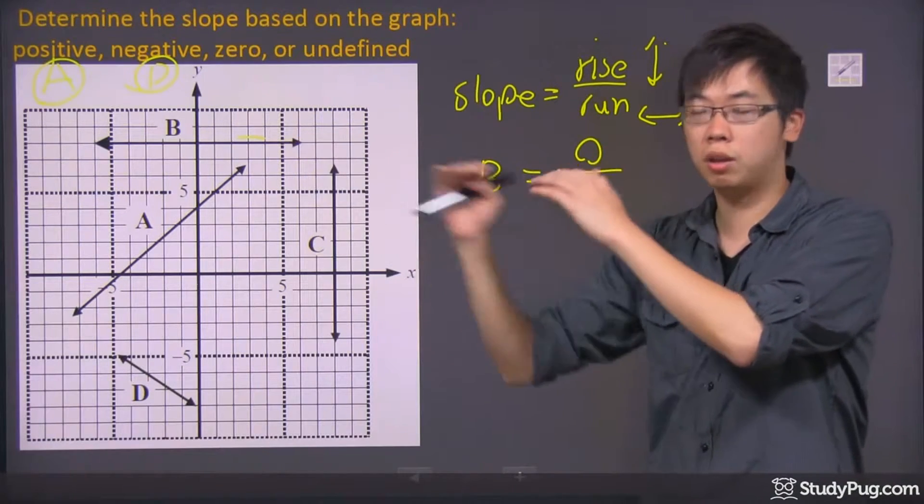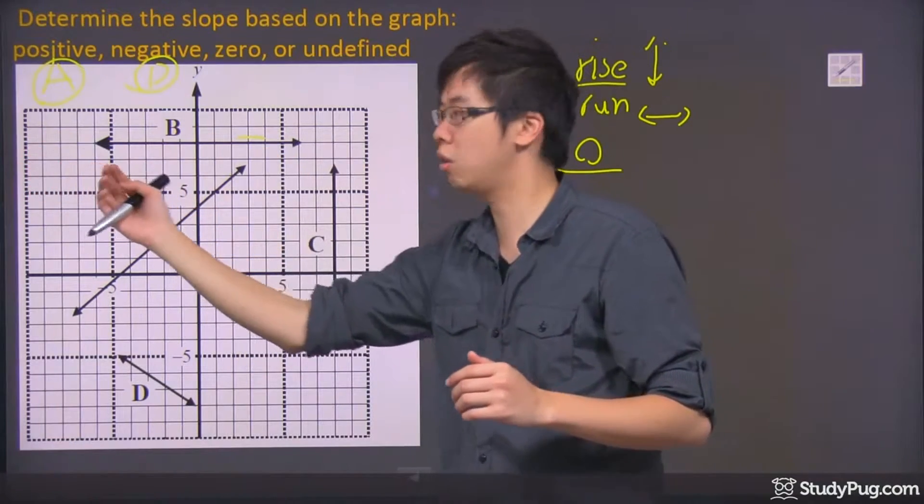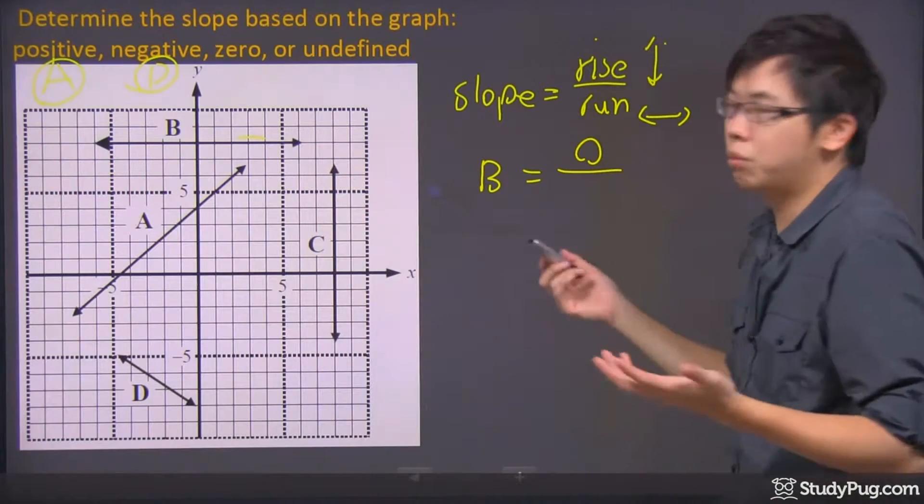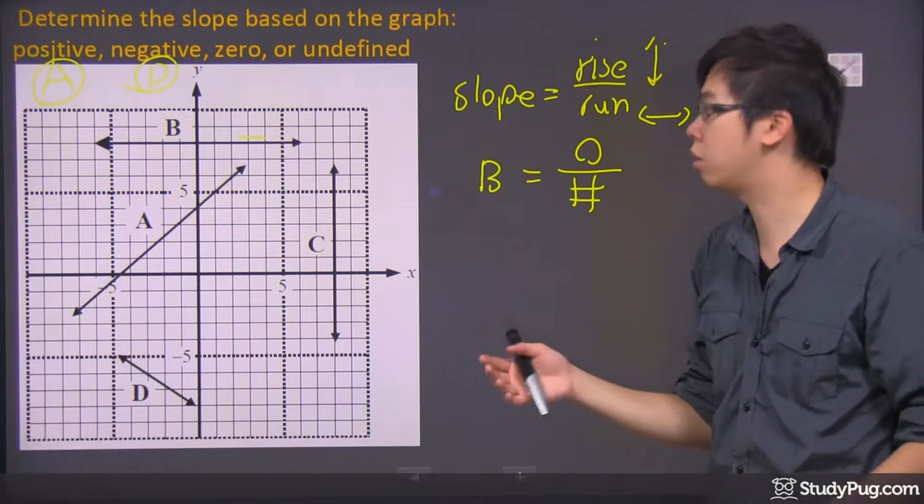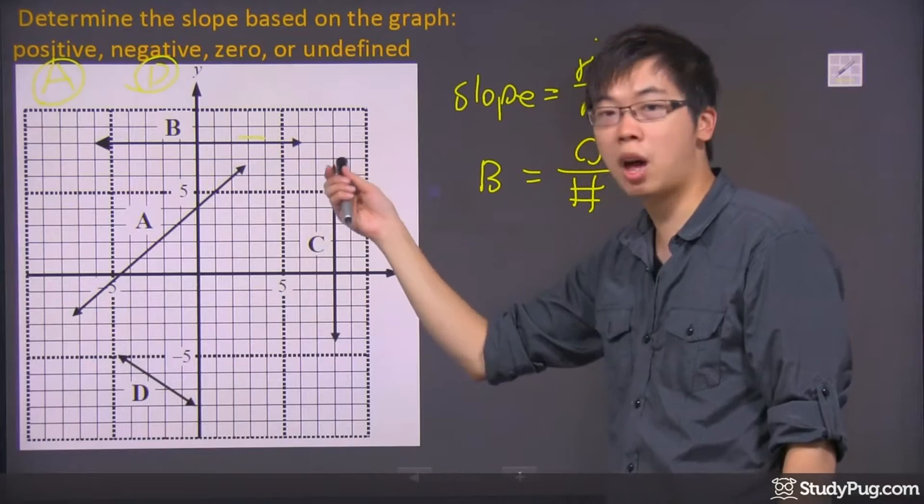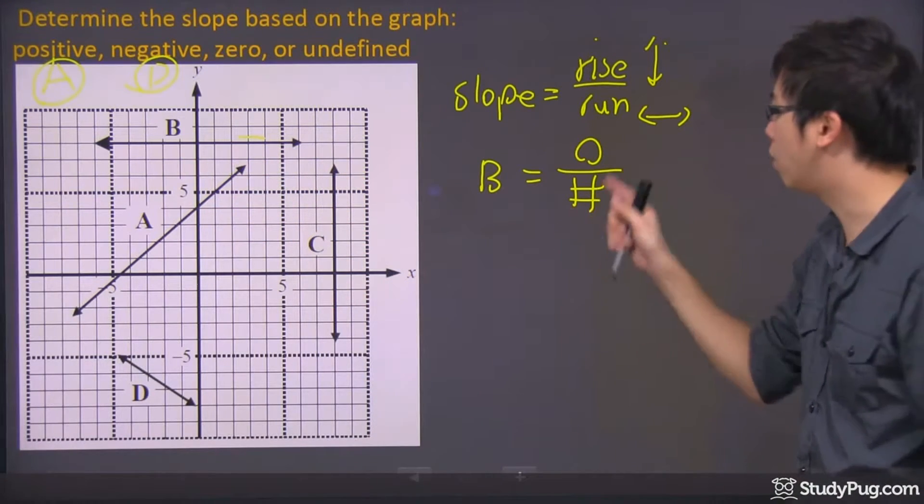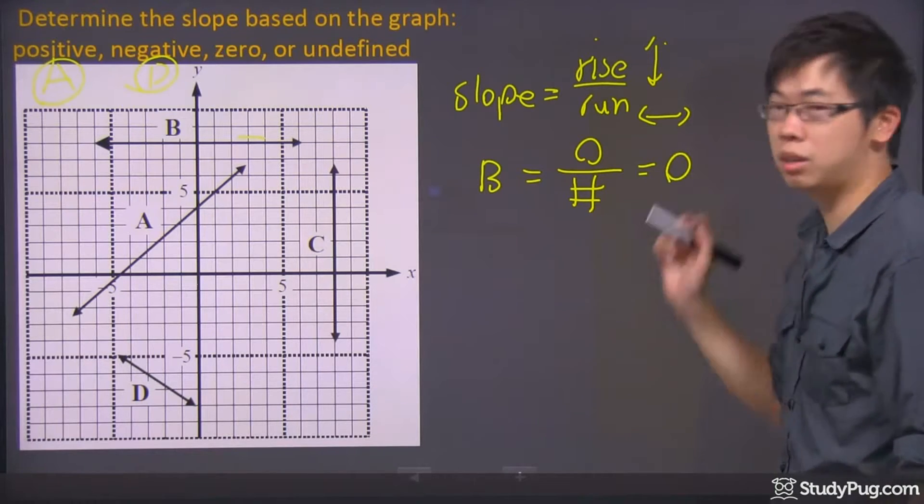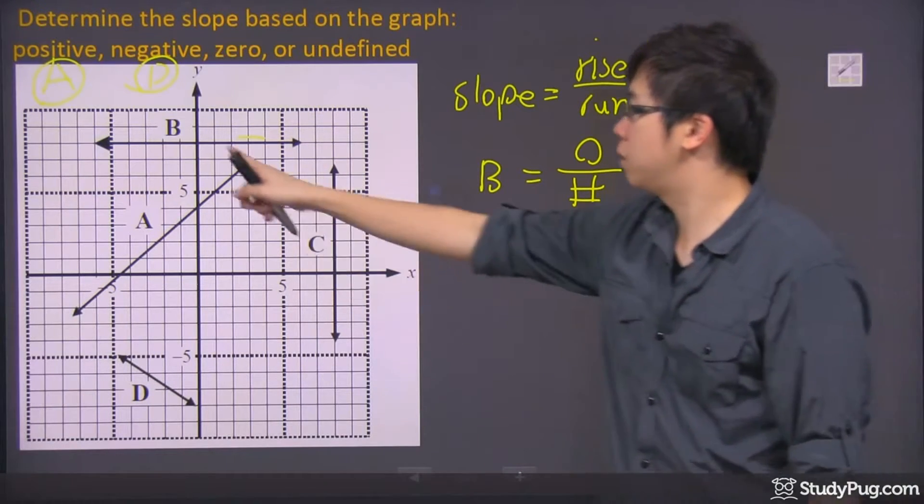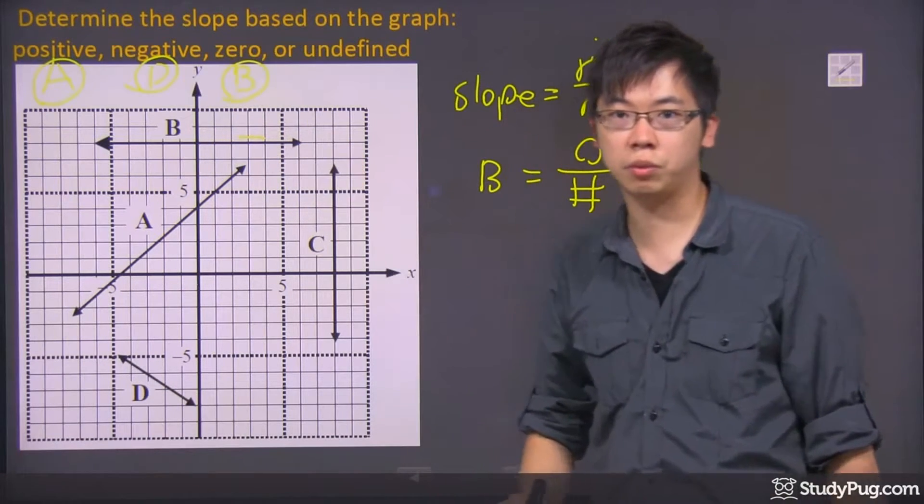And in terms of the run, it's actually going on infinity. Going left infinity, right infinity. So we can actually just give this, let's say there's a number right here. It doesn't matter. You can say that it's going to the right five units or left five units. It doesn't matter. It's a number down here. Now, zero divided by anything, it's still going to give you the zero. So that's why the B has a slope of the zero.